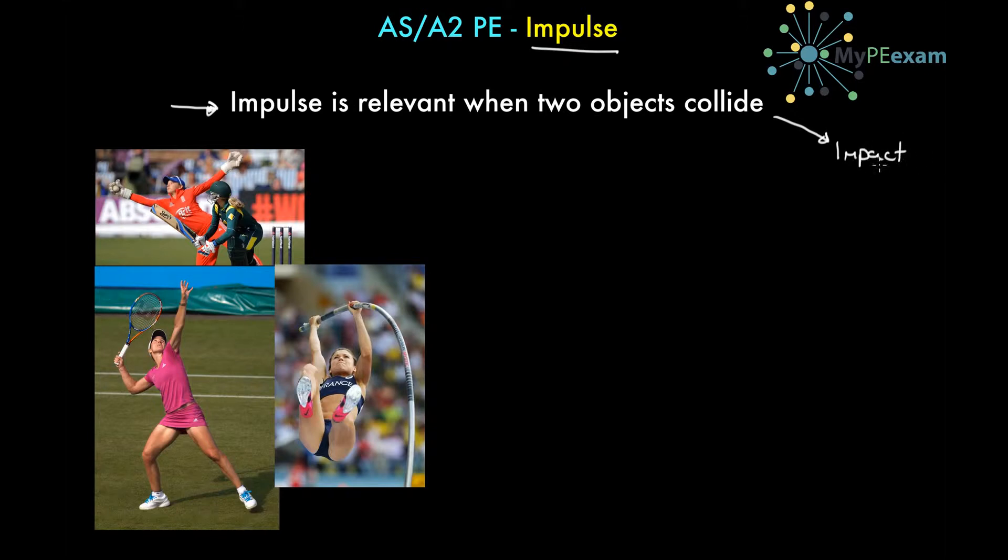We have an impulse when two or more object surfaces collide with one another. That could be when a tennis player strikes a tennis ball, or when the tennis player pushes off the ground. We have two surfaces—the grass, the earth, and the shoe—colliding with one another and force being applied. We have collisions in all kinds of scenarios within sport.